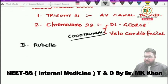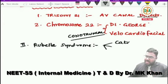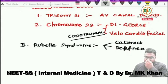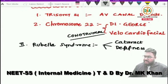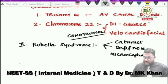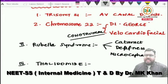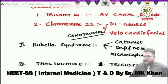Environmental factors responsible for congenital heart disease include rubella syndrome — the neonate is born with cataracts, deafness, and microcephaly. Thalidomide is responsible for limb deformities along with Ebstein anomaly or tricuspid valve defects.